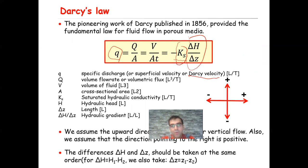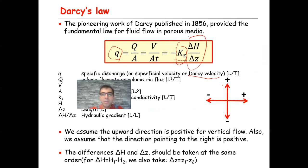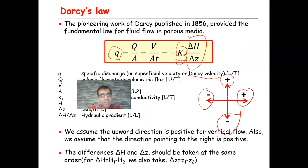In this course, we assume the upward direction is positive for vertical flow, and the direction pointing to the right is positive for horizontal flow. The direction pointing to the left is negative, and downward flow is also negative. Another important convention: the differences delta H and delta Z should be taken in the same order — for example, if delta H equals H1 minus H2, then delta Z should be Z1 minus Z2.